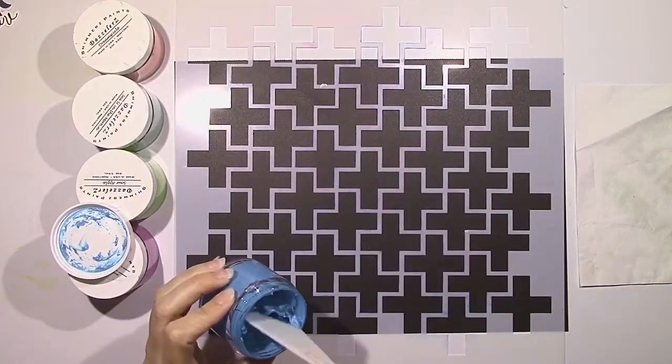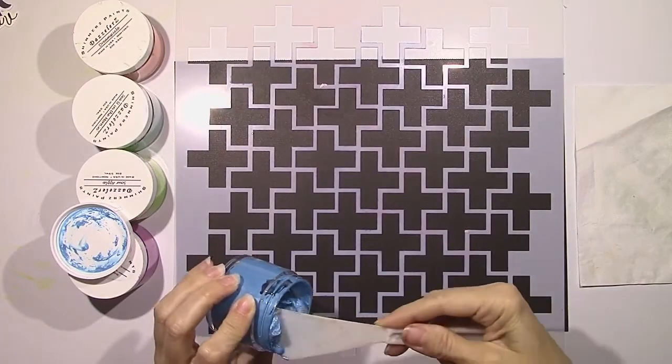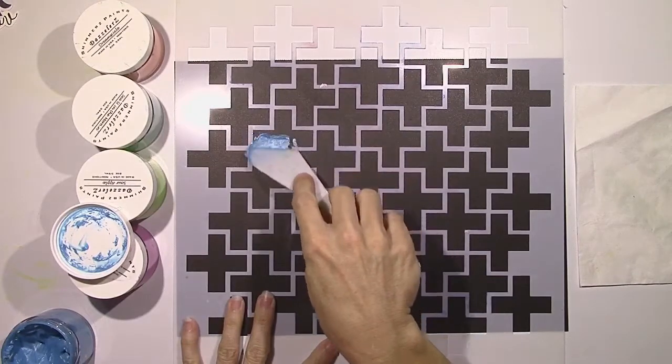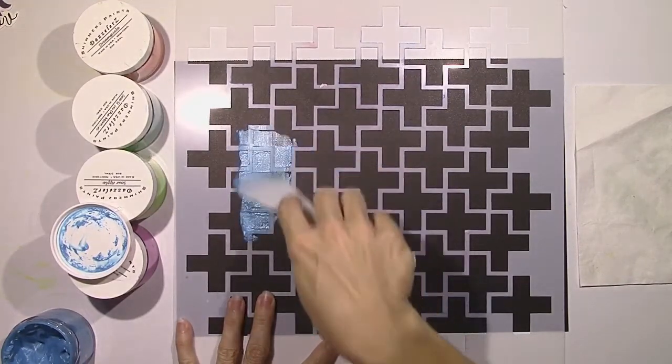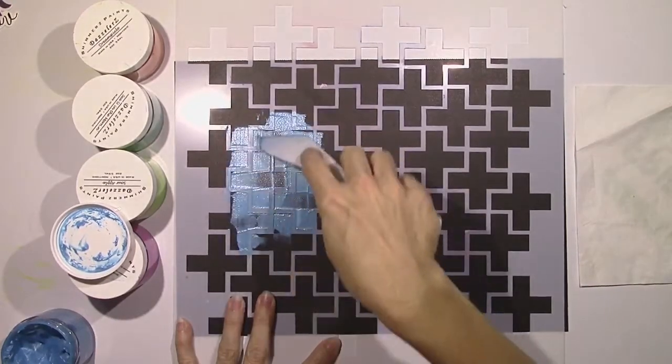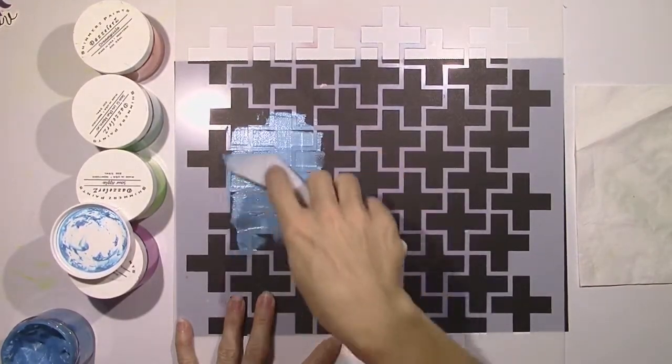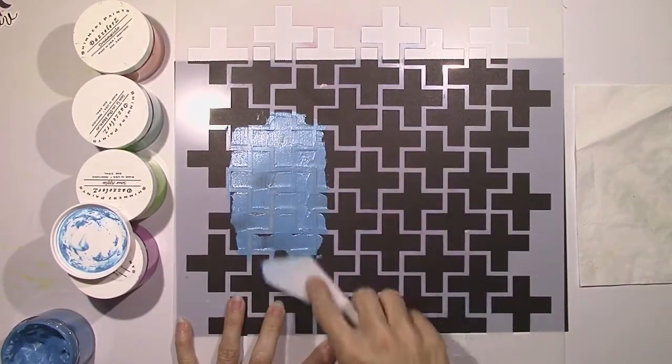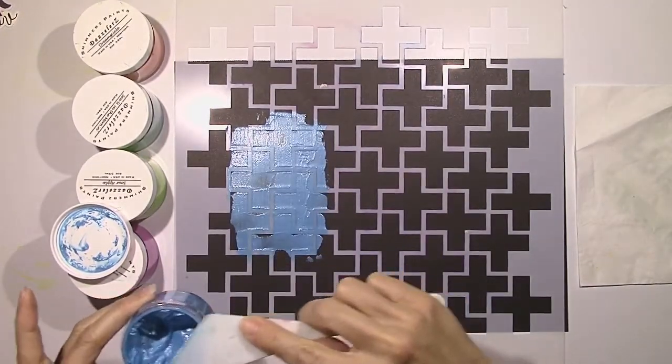So this is a stencil from my stash. I've actually never used it, so I wanted to try something different today. I'm just using a palette knife and I've got several colors of the Dazzlers here. They are Shimmery Smooth Texture Paste. This is a very bright blue color called Gummy Berry Blue, and I'm just scrubbing some right onto the stencil and the cardstock here.